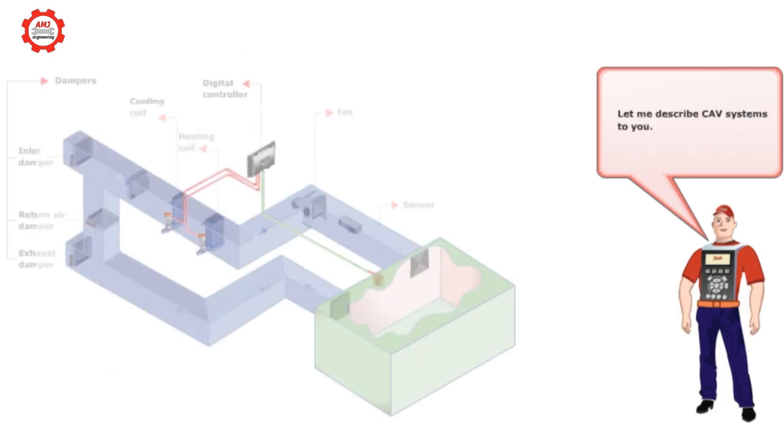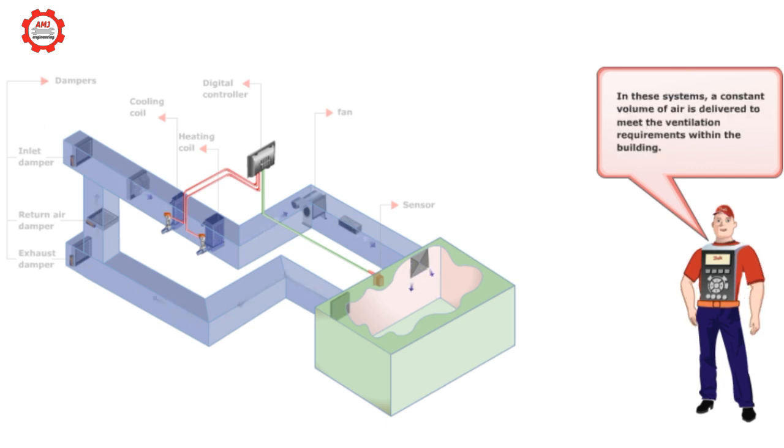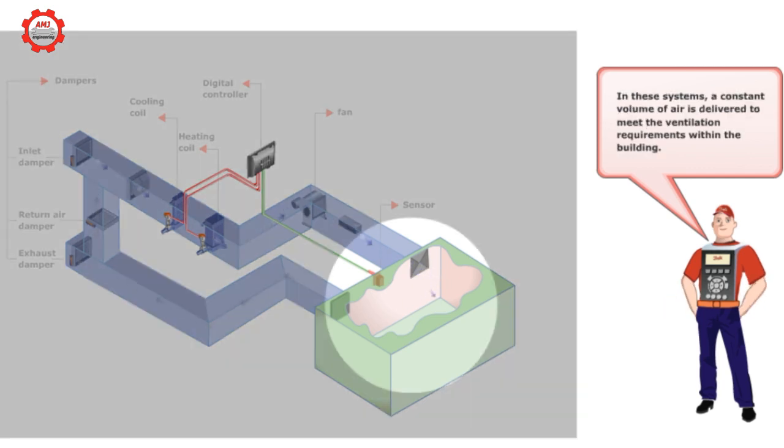Let me describe constant air volume systems to you. In these systems, a constant volume of air is delivered to meet the ventilation requirements within the building.